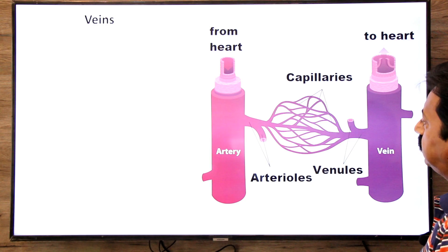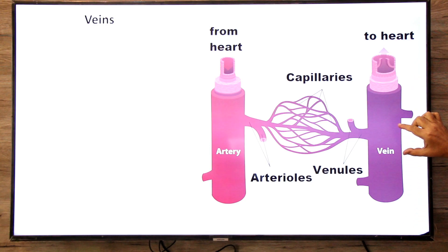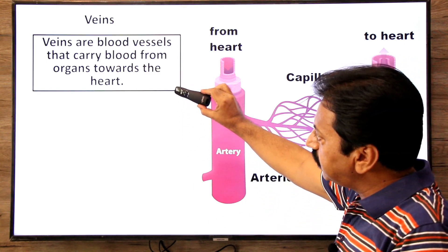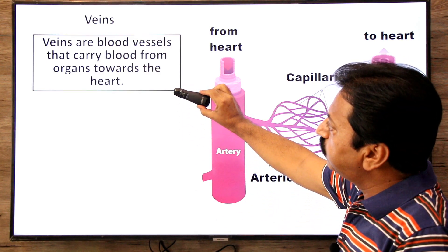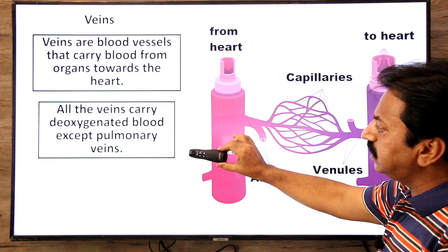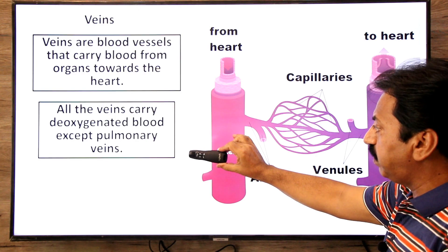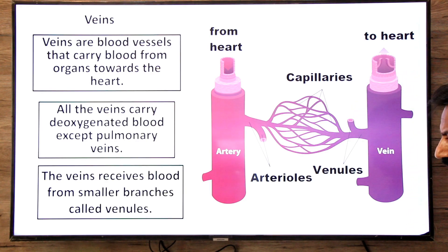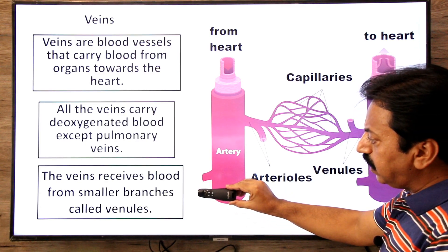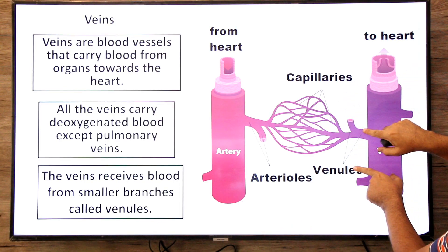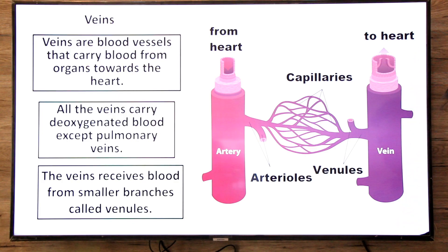Now, veins. Veins are the blood vessels that carry blood from different organs back to the heart. All veins carry deoxygenated blood except the pulmonary veins — because pulmonary veins come from the lungs towards the heart, they carry oxygenated blood. Veins receive blood from smaller branches called venules, and from the veins blood returns to the heart.